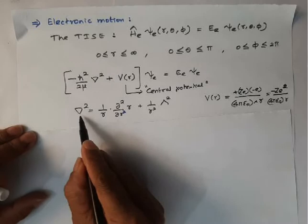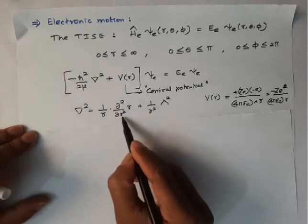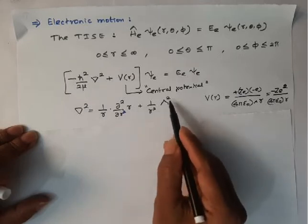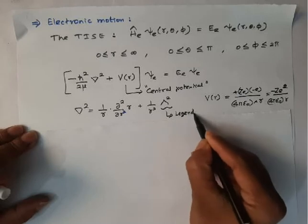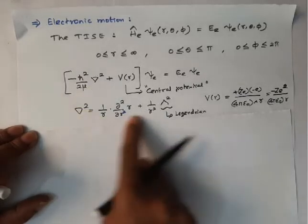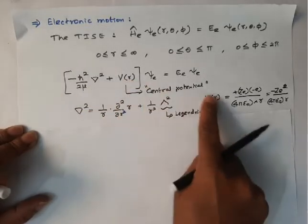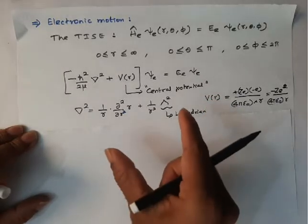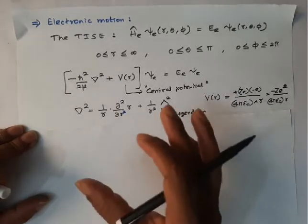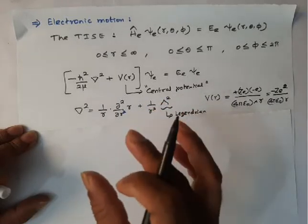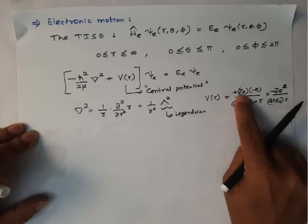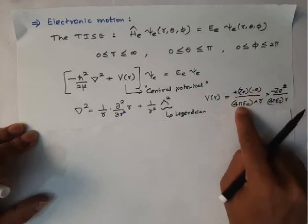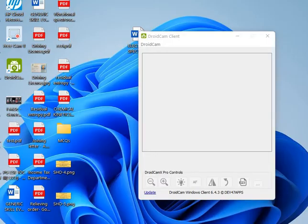The Laplacian operator ∇² can be written as (1/r)(∂²/∂r²)r + (1/r²)Λ², where Λ² is called the Legendrian operator. The potential energy is the attractive (Coulombic) potential energy between the nucleus and the electron. Since they carry opposite charges, there is an attraction. The Coulombic potential energy is −Ze²/(4πε₀r), where ε₀ is the permittivity of vacuum.